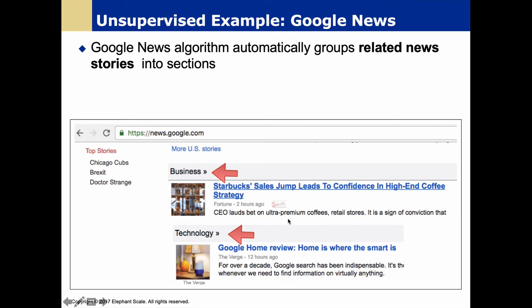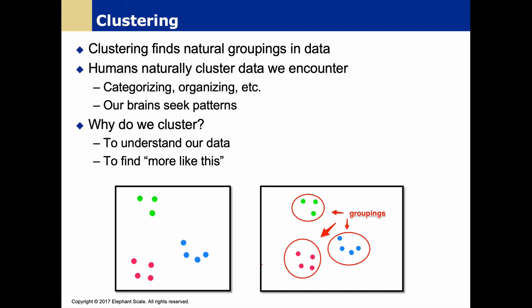Google News is another example: you see a story about Starbucks or Google Home and suddenly there are 100 other related stories. Google didn't train that by labeling stories as 'Starbucks.' As new stories come in, they could be about different topics. Instead, it learns cluster-based relationships — unsupervised machine learning. Clustering is something we as humans do instinctively — we see data and organize it, categorize it, because we want to understand it and find more like it. Applications include genomics, consumer grouping, and politics.